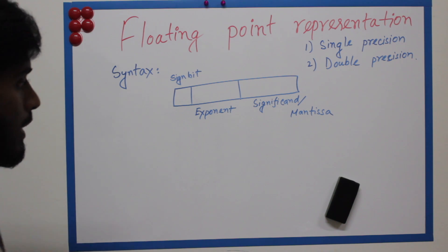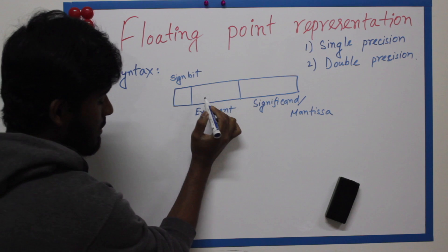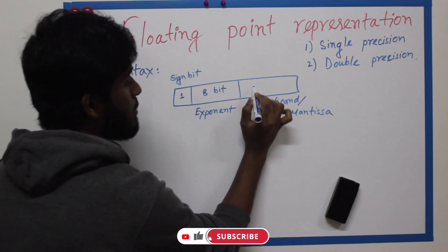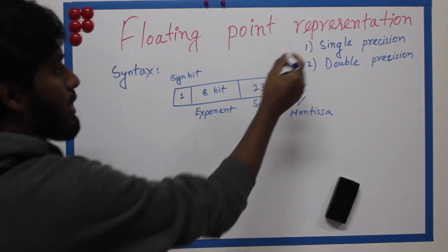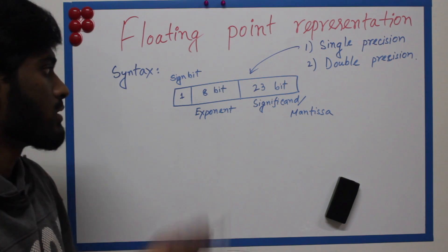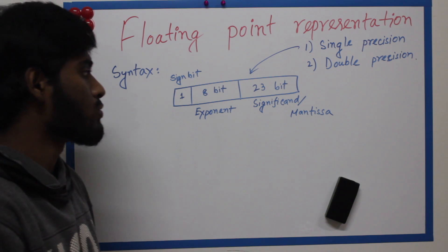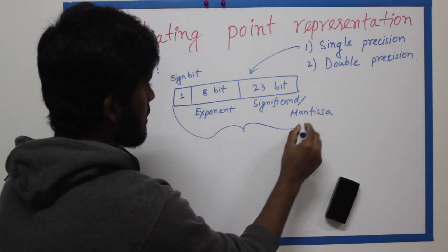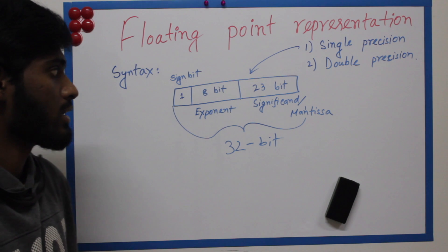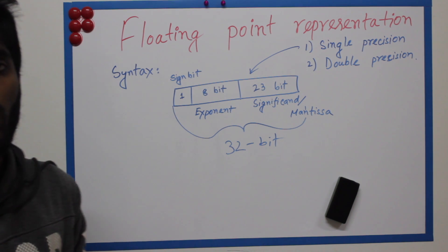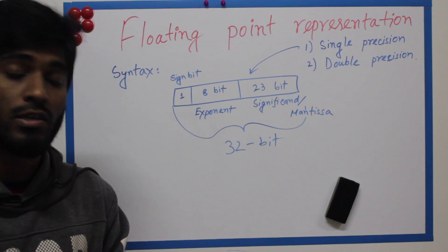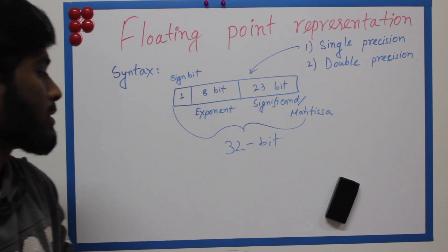For single precision: 1 bit for the sign bit, 8 bits for the exponent, and 23 bits for the significant. So 1 plus 8 plus 23 equals 32 bits total. Single precision is 32 bits.